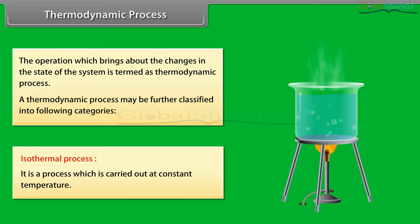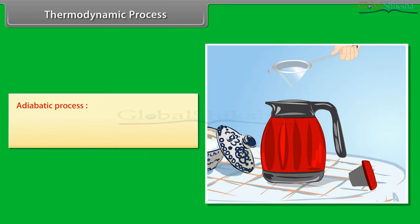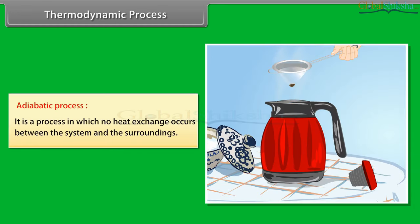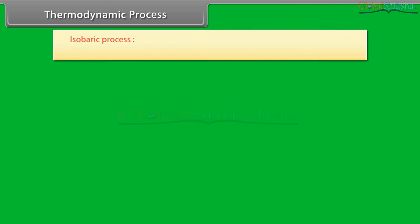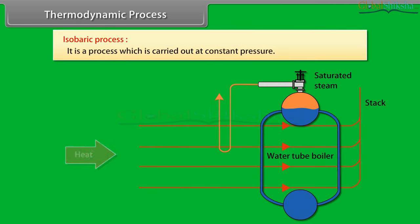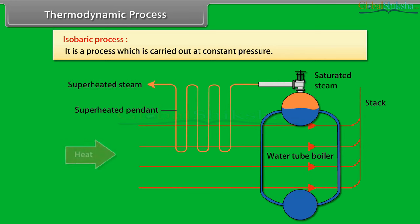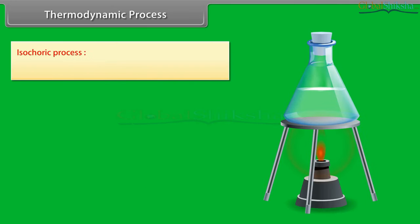Isothermal process: a process which is carried out at constant temperature. Adiabatic process: a process in which no heat exchange occurs between the system and the surroundings. Isobaric process: a process which is carried out at constant pressure. Isochoric process: a process which is carried out at constant volume.